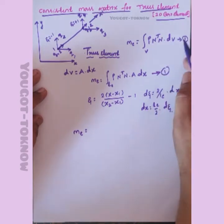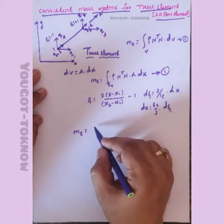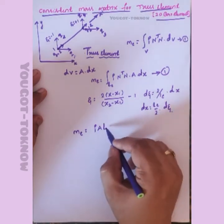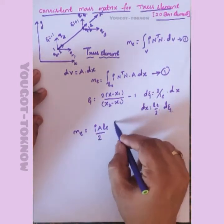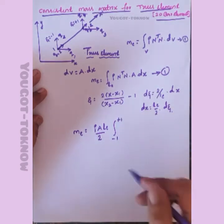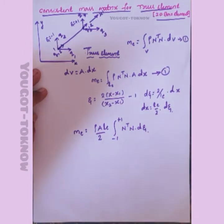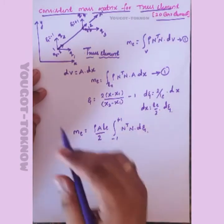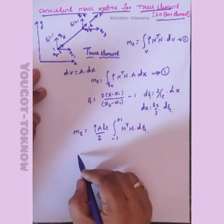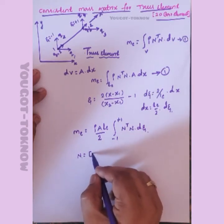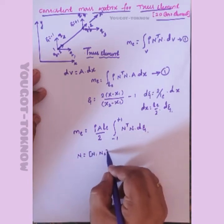So Me equals rho A Le over 2, integrated from minus 1 to plus 1 of N-transpose times N d-zeta. Now what is N? Since this looks like a bar element, N will have two shape functions N1 and N2.